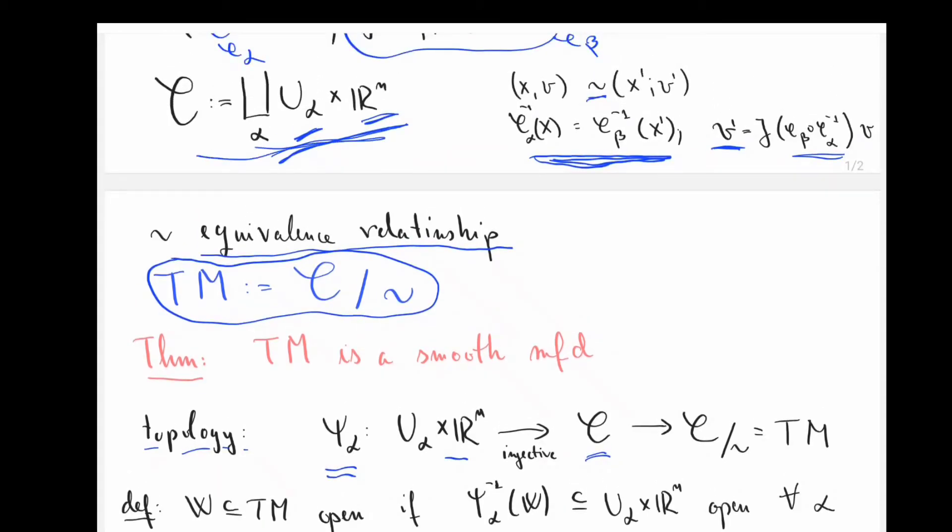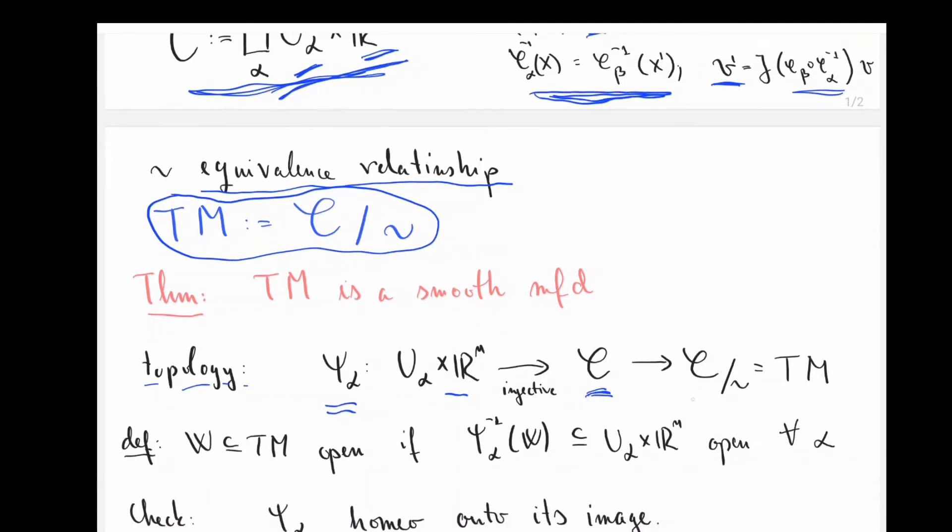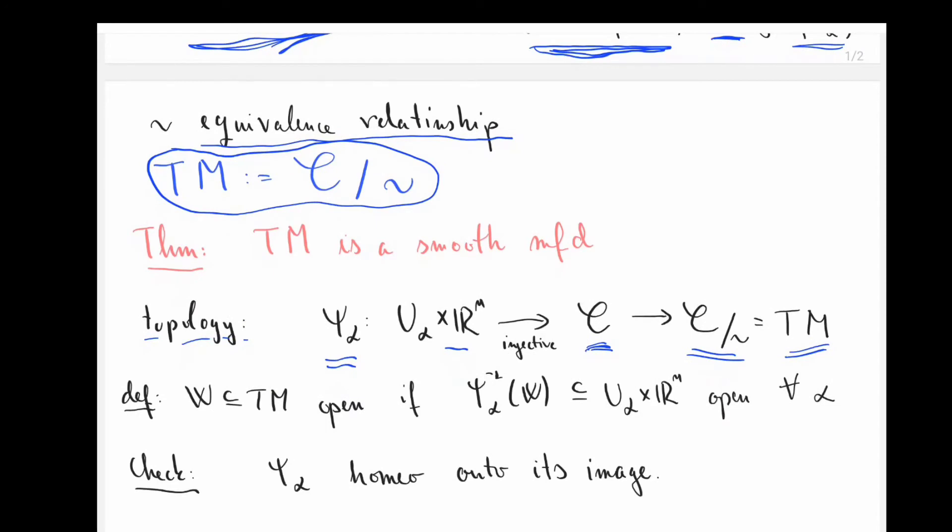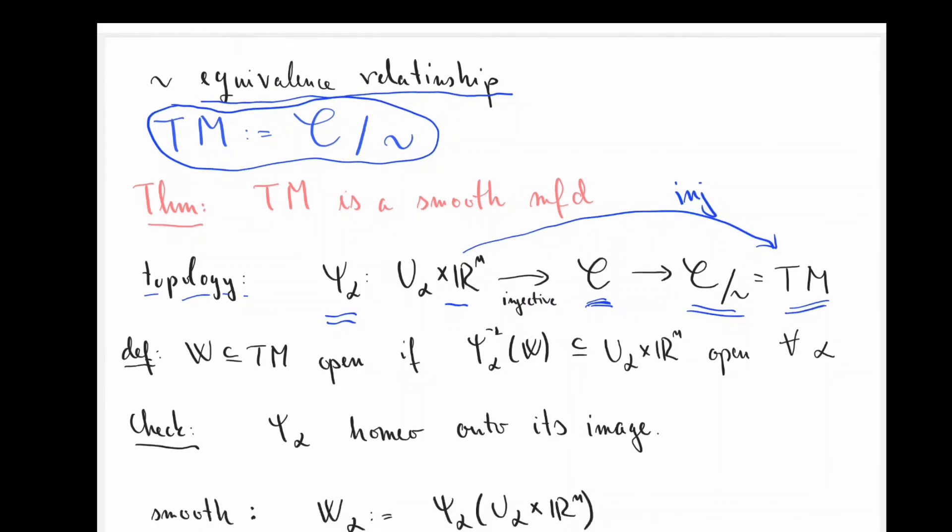Now, it's not hard to see that psi alpha is injective going from here to here. So it's convenient to define the topology on TM in the following manner.